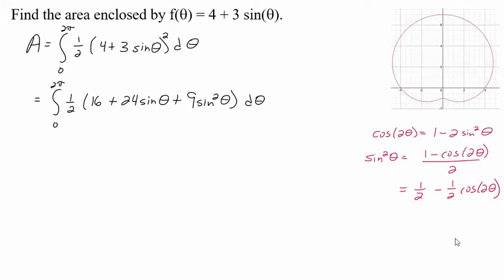All right, so the next thing I'm going to do is multiply or substitute this sine squared in there. Now this has 9 times sine squared, so I'm going to multiply these by 9 and distribute that in there. Let's pull this half out in front of this integral, and so now I've got 16 plus 24 sine theta plus 9 times this business over here. So 9 times a half minus 9 times a half cosine 2 theta d theta.